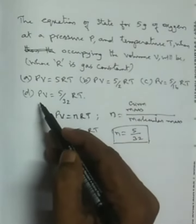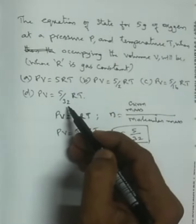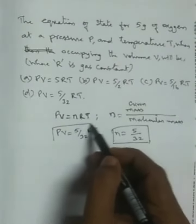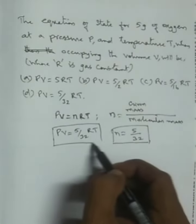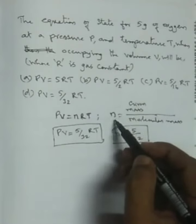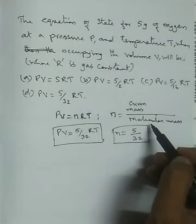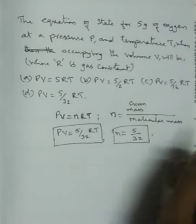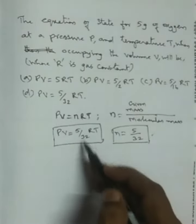The answer is D. PV is equal to 5 by 32 RT. So the answer is given mass divided by molar mass or molecular mass. This is the answer, 5 by 32.